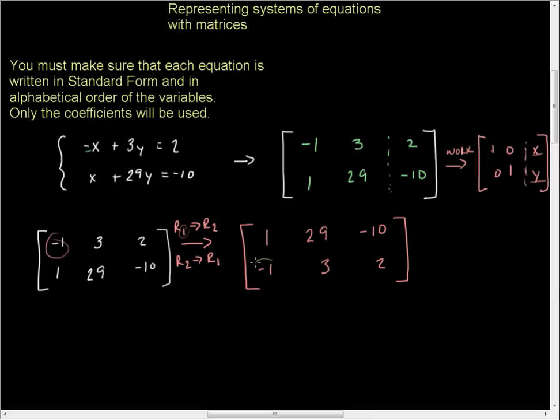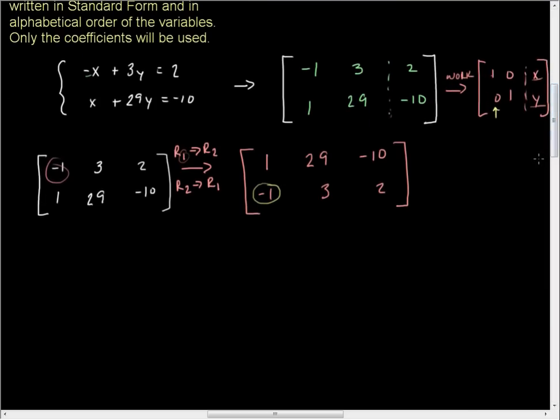In that case, what we want to do is we want to make this entry 0. We can add any two rows together and place the result in one of the two rows. If we add 1 and negative 1, we get 0, and that's what I need. I can add rows 1 and 2. I'm going to take row 1, add it to row 2, and put the result in row 2.